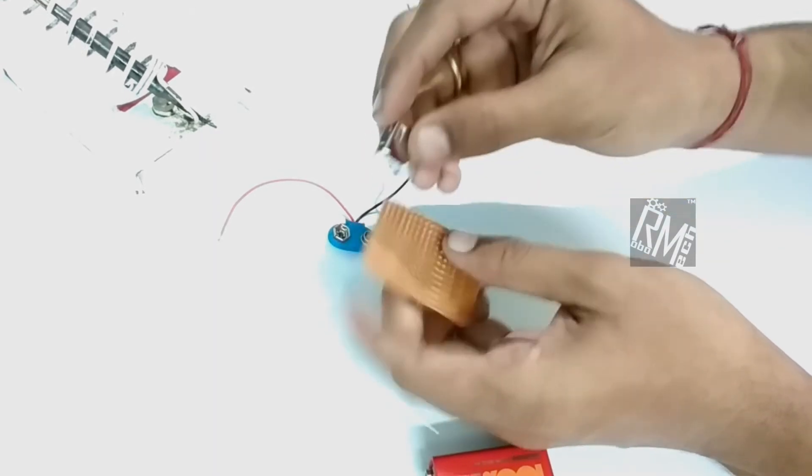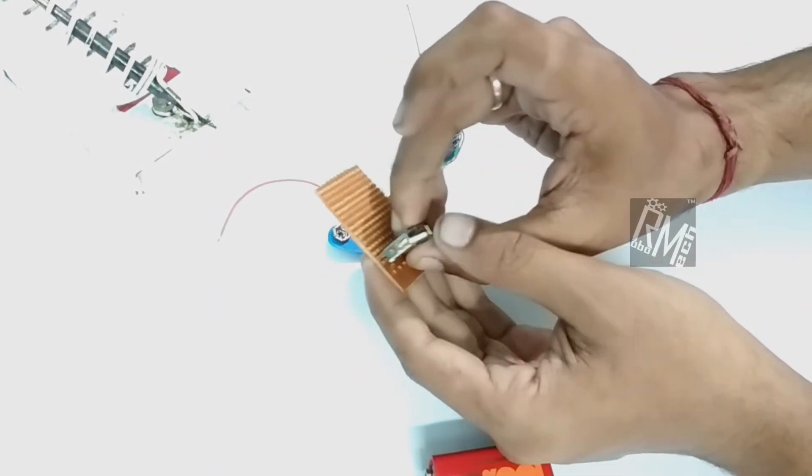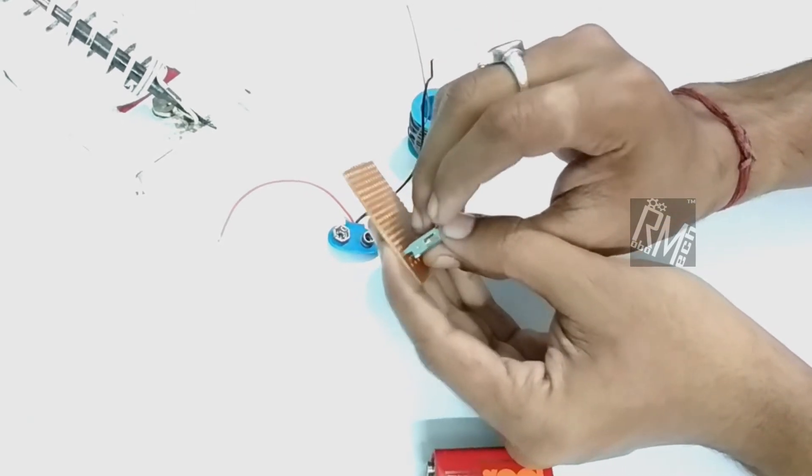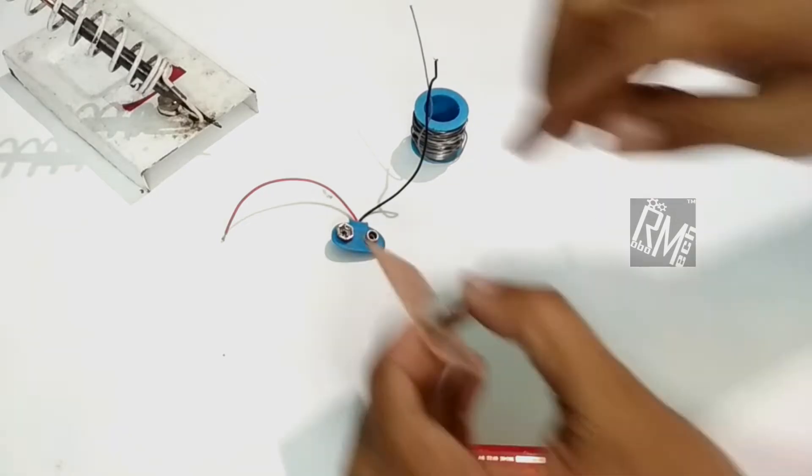Now we are going to mount this USB header on this perforated board. I think I need to increase the hole size so that it can easily slip into the hole, so let me do that.